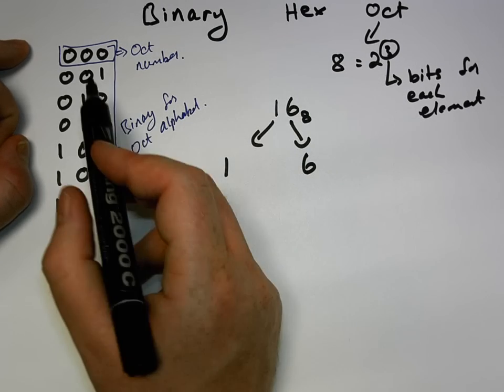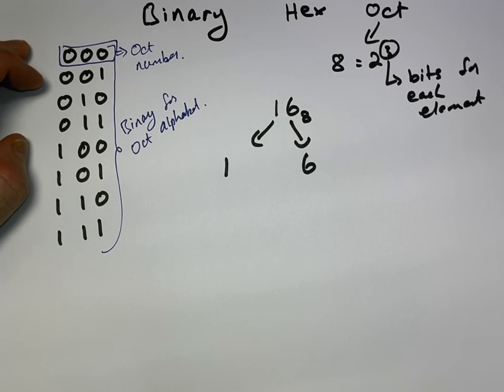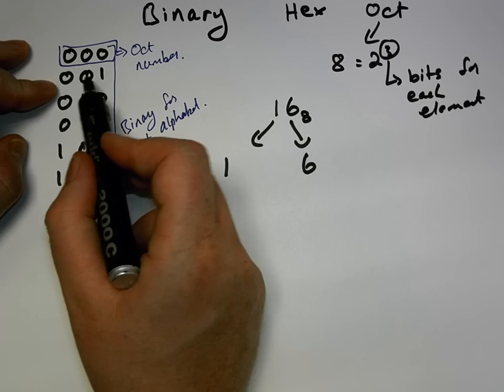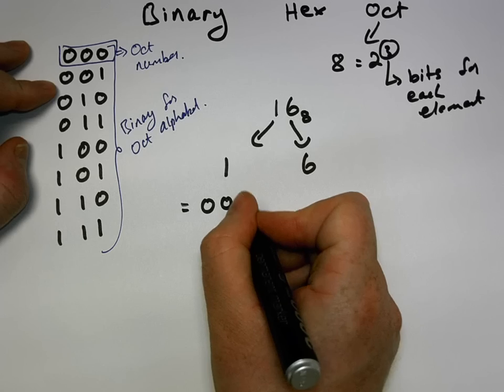We now look up the table. So we have zero, one. So for one we should have zero, zero, one, and we just convert this: zero, zero, one.